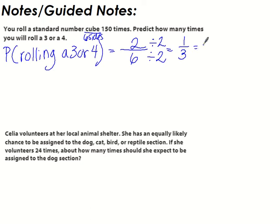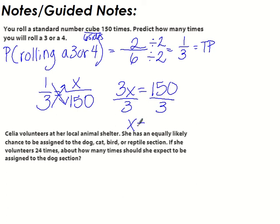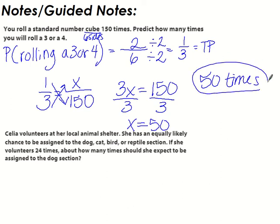Now that we have our theoretical probability of 1/3, we can use it. 1/3 equals how many out of 150? Just like with experimental probability, we use a proportion and cross multiply. 3 times x is 3x, and 1 times 150 is 150. Divide by 3 — x equals 50. So we predict rolling a 3 or a 4 about 50 times.